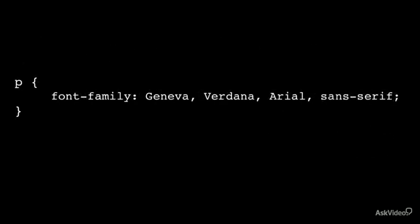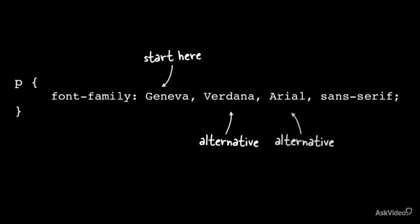Let's look at a more real example. We have our paragraph rule, the font-family property, and then three real fonts specified: Geneva, Verdana, Arial, and then the generic choice, sans-serif. What happens is the browser starts with Geneva, and if it has it, it uses it. Otherwise, it moves on to the alternative, Verdana. If that's not there, it moves on and looks for Arial. And if none of those can be found, we'll just take whatever sans-serif font the browser can supply.